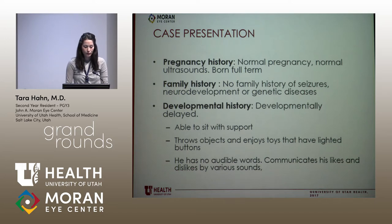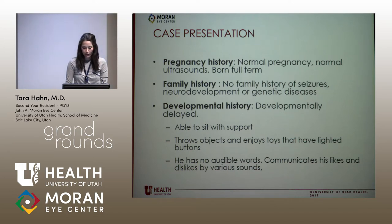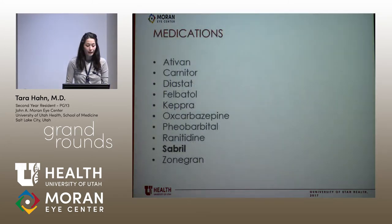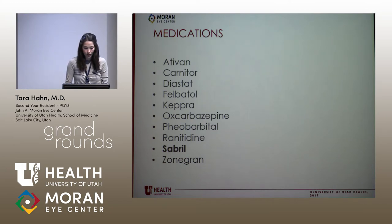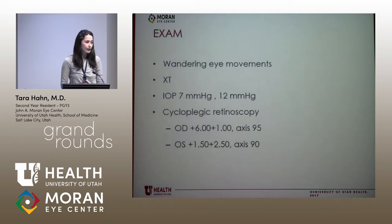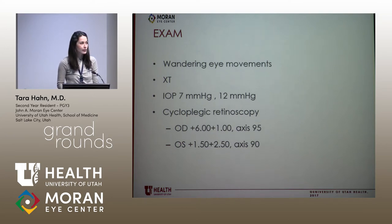There is no family history of seizures, no neurodevelopmental or genetic diseases that run in the family. He is developmentally delayed — he sits with support, can throw objects, and likes toys with lighted buttons. He cannot say any words but communicates his likes and dislikes with sounds. He is on multiple medications, including Sabril — Vigabatrin — which we'll be discussing. Because of his Vigabatrin use, eye exams were recommended. Unfortunately, the first exam he received was just VEP and ERG without an exam under anesthesia. The first time we're seeing him is April 2018.